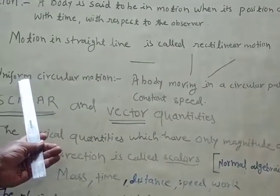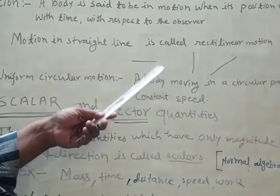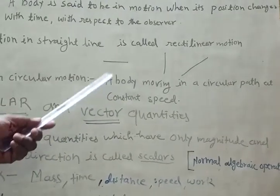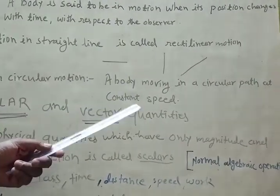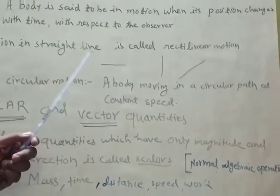Now uniform. What does equal time interval mean? Equal distance cover. It means that one minute, one minute, one minute, one minute uniform motion.